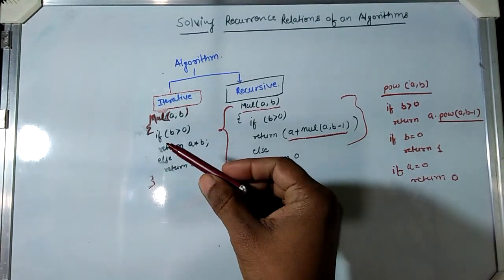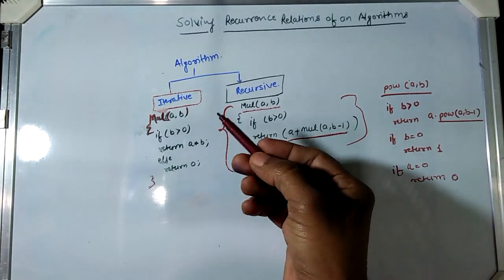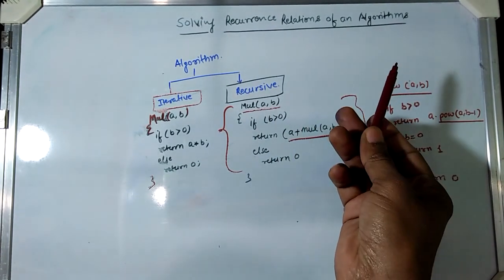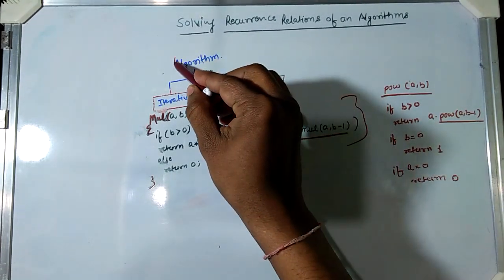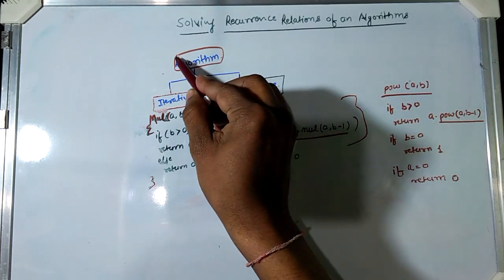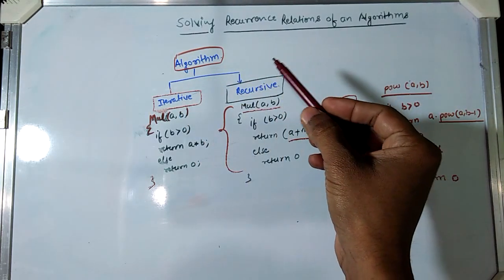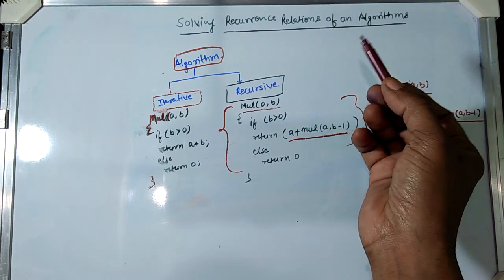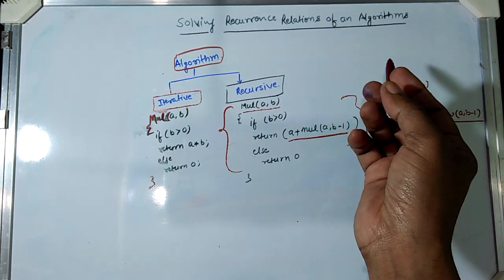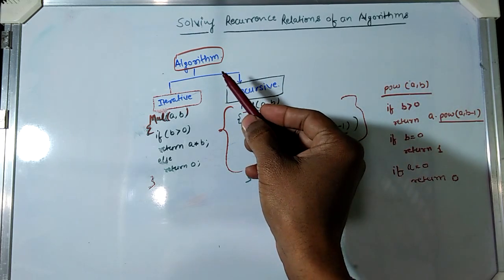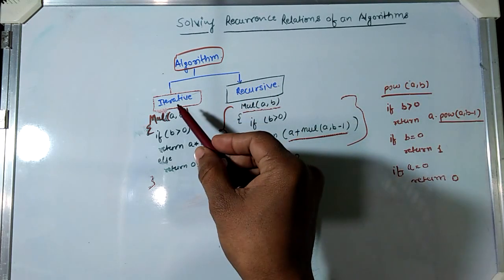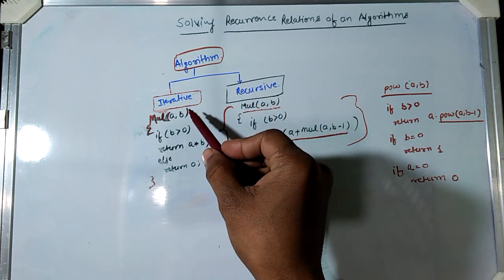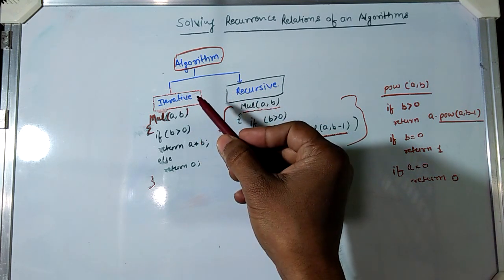In this video we will learn how to solve the recurrence relation of an algorithm. An algorithm is a finite number of steps to solve a particular problem with defined input and output. Algorithms can be divided into two parts: iterative and recursive.